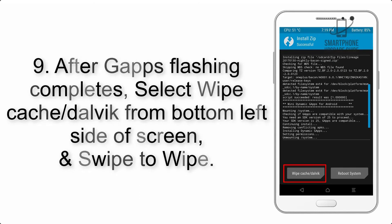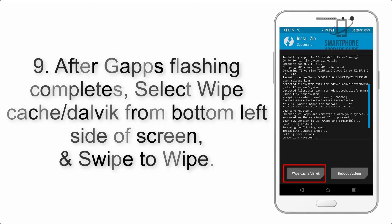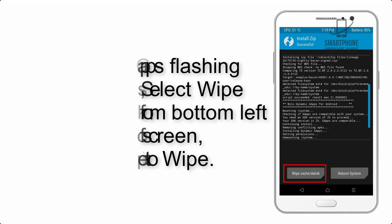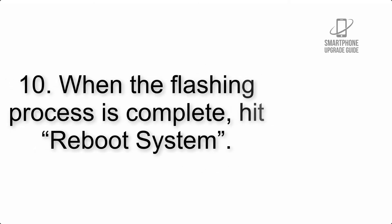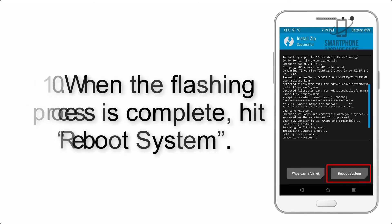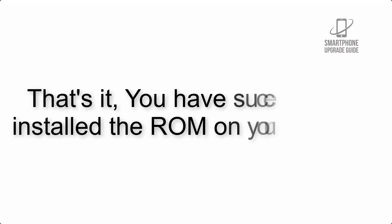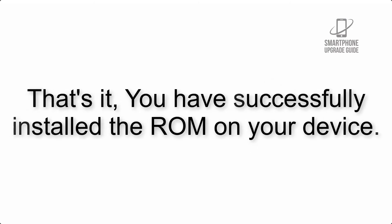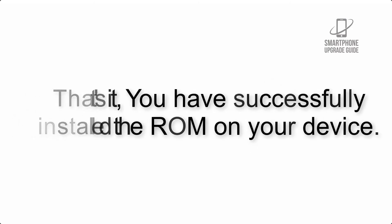Step 8: flash the gapps zip package in the same manner. Step 9: after gapps flashing completes, select Wipe Cache and Dalvik from the bottom left side of the screen and swipe to wipe. Step 10: when the flashing process is complete, hit Reboot System. That's it — you have successfully installed the ROM on your device.